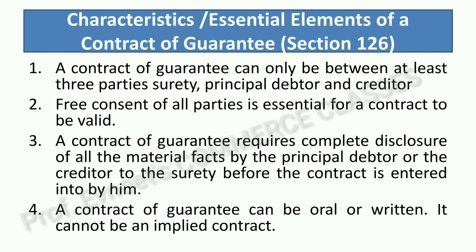Second: free consent of all the parties is essential for a contract to be valid. In a Contract of Guarantee, free consent of all parties is very important — all parties must understand the terms and conditions. If one party has been misled or is under doubt, there is no valid guarantee. So it should be free consent.